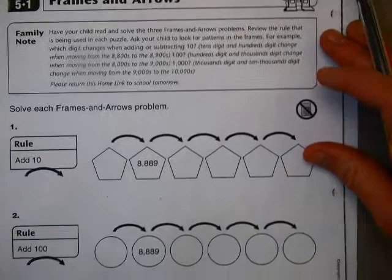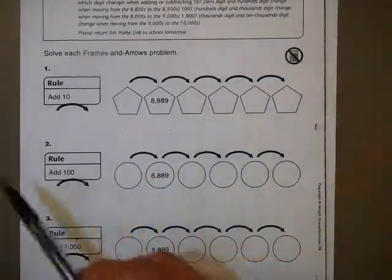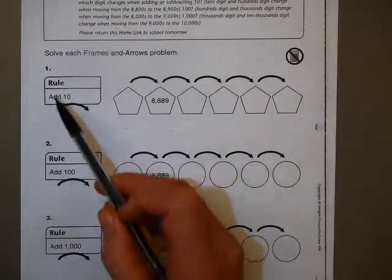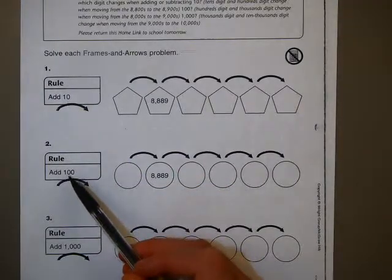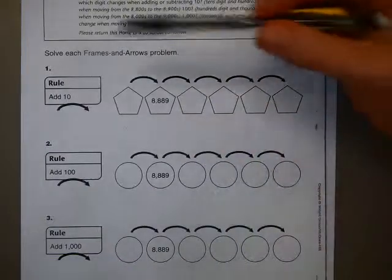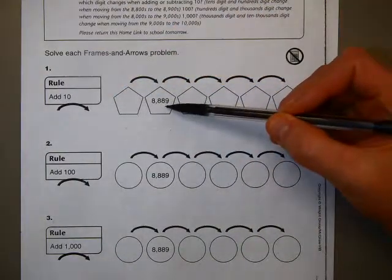We're just going to take a look at these so you can get the idea for how to do them. You'll notice that there are three problems. And each problem has a rule. So the first rule is to add ten. The second rule is to add 100. And the third rule is to add 1,000.